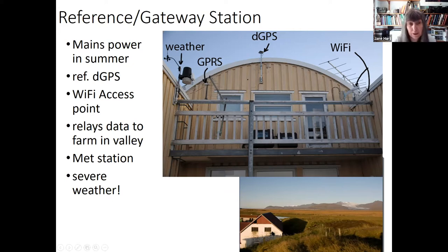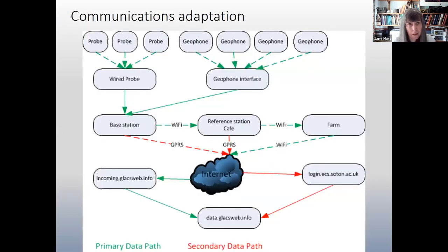But it did have to cope with severe weather. I suppose I should say that one of our kind of rationale from the beginning was that if we can get the sensor network to work in a glacial environment, then hopefully it will work anywhere.